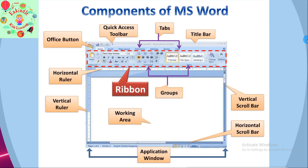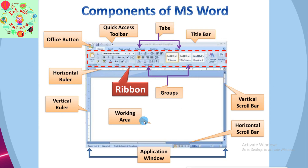In a previous video we have already seen the different components of MS Word, like the Office Button, Quick Access Toolbar, Tabs, Title Bar, Groups, Ribbon, horizontal and vertical ruler, working area, application window, and vertical and horizontal scroll bar.